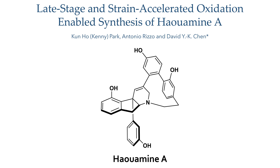Hauamine A is an alkaloid which belongs to a class of compounds known as cyclophanes. Cyclophanes are macrocyclic compounds which contain an aromatic ring within the macrocycle. The macrocyclic ring introduces a lot of strain on the aromatic system by bending it out of planarity, giving the compounds very unusual physical properties and chemical reactivities.